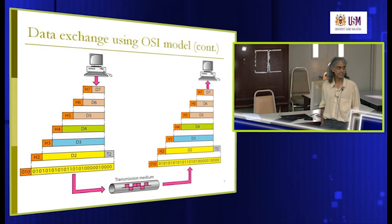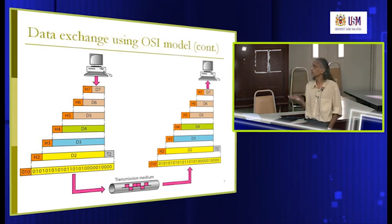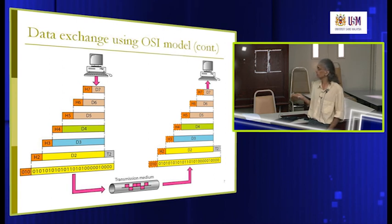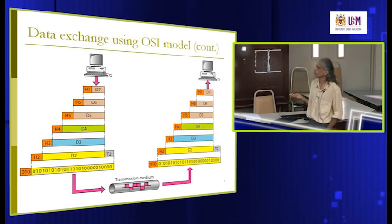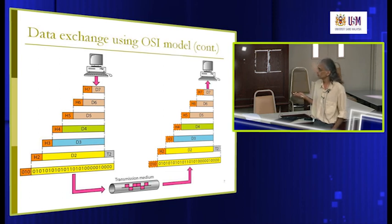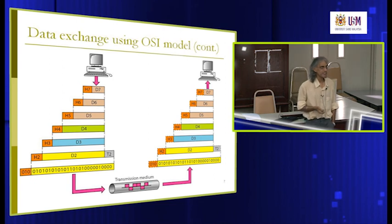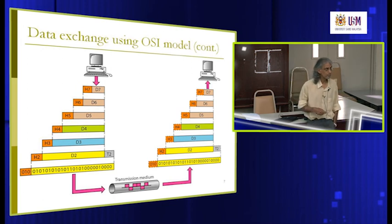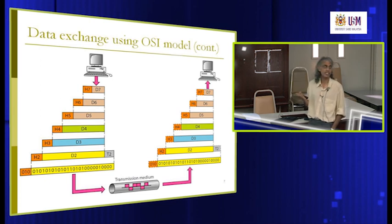As data goes down from the user, each layer will add a particular header to it, all the way until the bits are transmitted via signals on the cable. On the receiver side, we receive the packet of data and remove the headers one by one to check correctness. If the data is not valid it is dropped, and only if the header is correct is the data passed on to the higher layer.